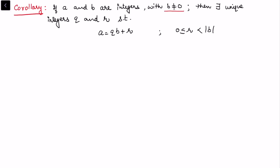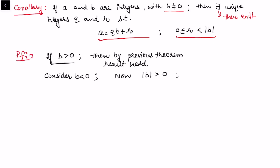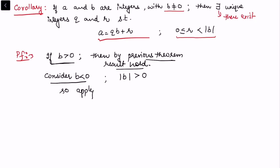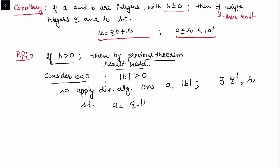As a corollary, if a and b are integers with b ≠ 0, there exist unique integers q and r such that a = qb + r with 0 ≤ r < |b|. If b > 0, the previous theorem already applies. For the case b < 0, note that |b| is always positive, so we can apply the division algorithm to a and |b|, obtaining integers q' and r such that a = q'|b| + r with 0 ≤ r < |b|.